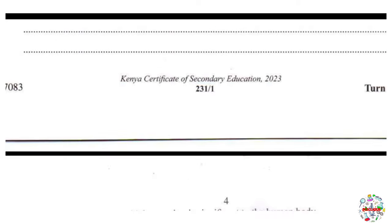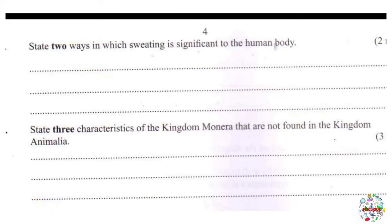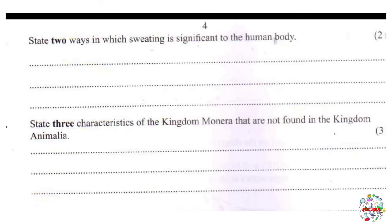Question 6: state two ways in which sweating is significant to the human body. Number one is thermoregulation — it helps in regulating our body temperature. Number two is excretion — it helps us in getting rid of waste products such as urea and excess water.